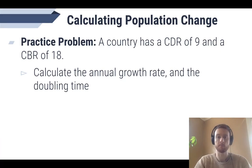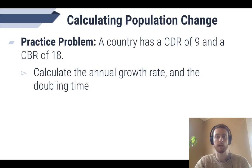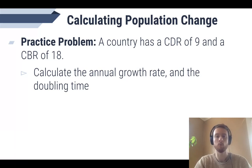Here's a practice problem that involves both growth rate and doubling time. See if you can calculate the growth rate for a country with a CDR of 9 and a CBR of 18, then use that population growth rate to figure out how long it would take this population to double. You can pause the video now, work this out, and when you unpause, the answer will be on the screen.